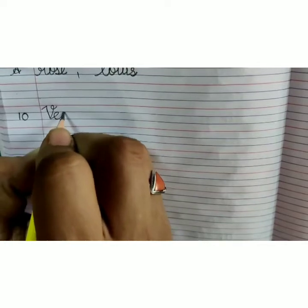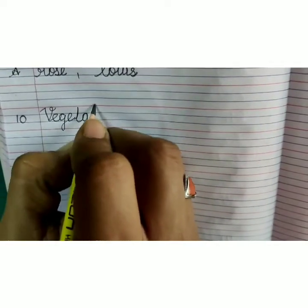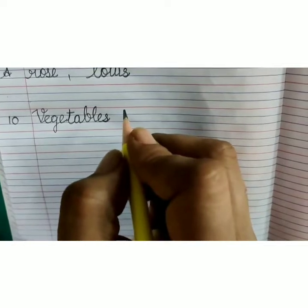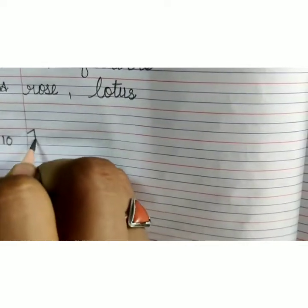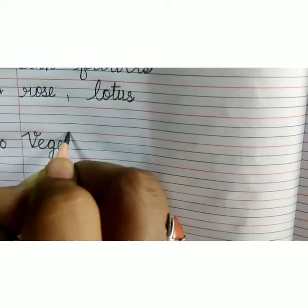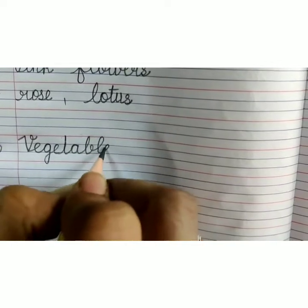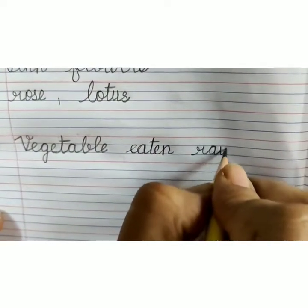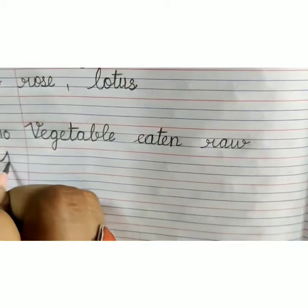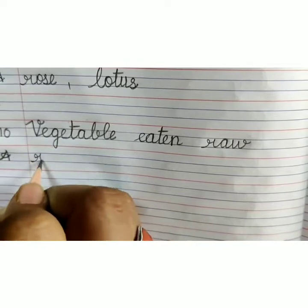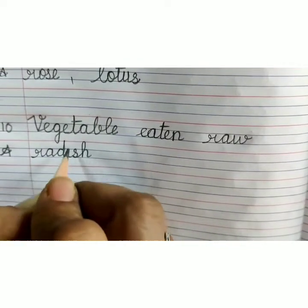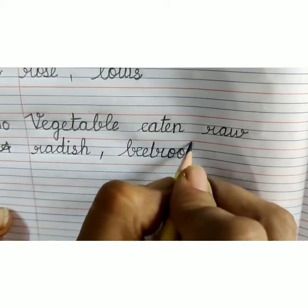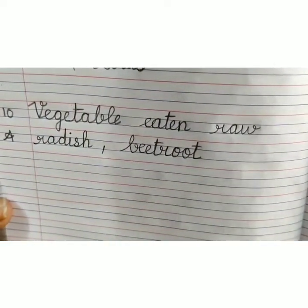Capital V-E-G-E-T-A-B-L-E-S, vegetables. Write number 10. Capital V-E-G-E-T-A-B-L-E, vegetable, E-A-T-E-N, eaten, R-A-W, raw. Vegetable eaten raw. Answer: R-A-D-I-S-H, radish, comma, B-E-E-T-R-O-O-T, beetroot.